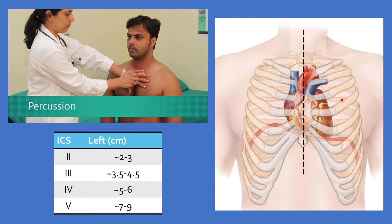Then go to the fourth intercostal space. Percuss from the lateral side — from the area of the lungs, eliciting resonance — until you reach dullness. Measure from the mid-line to the area where you elicited the dull sound. Normally, it should be 5 to 6 centimeters.